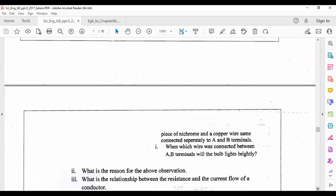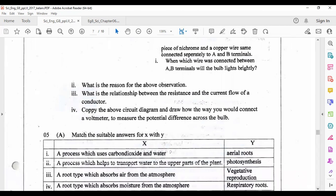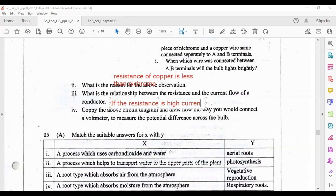Next part: what is the reason for the above observation? Write the reason: the resistance of copper is less than nichrome. What is the relationship between the resistance and the current flow of a conductor? When the resistance is low, current is high.